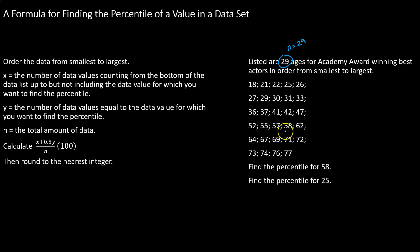So if we're looking at the data value 58, we want to find the percentile that that data value represents. We need to count how many data values are below that. So we have 5, 10, 15, 16, 17, 18 data values that are below and not including 58. That's what x represents.